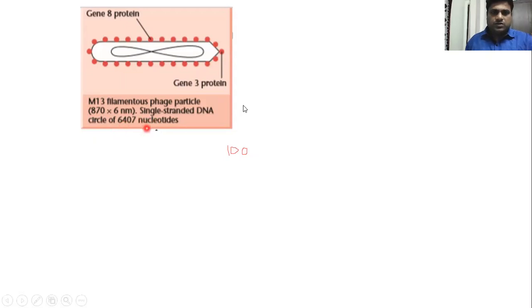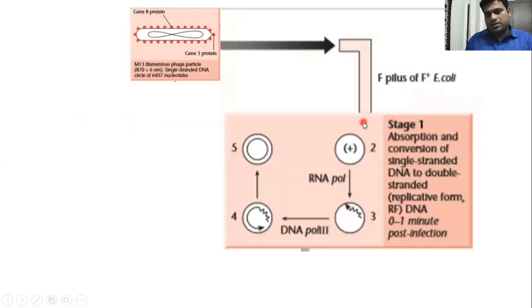If we are seeing E. coli, F-plus cells - these cells of E. coli having F-plus will be called F-plus. Through this pilus there is absorption of the phage going inside.